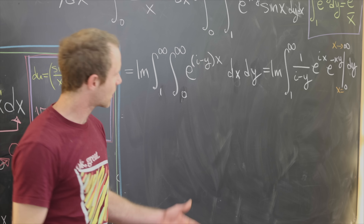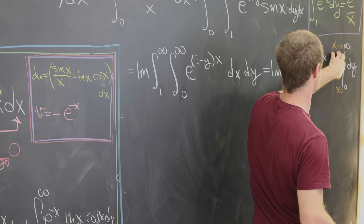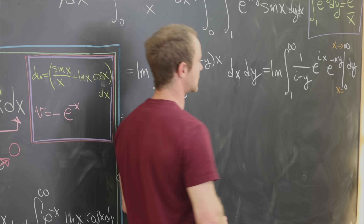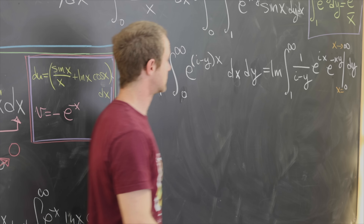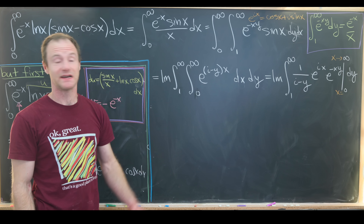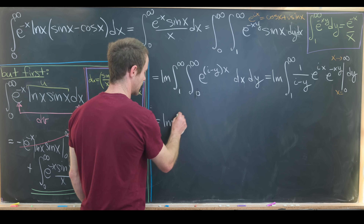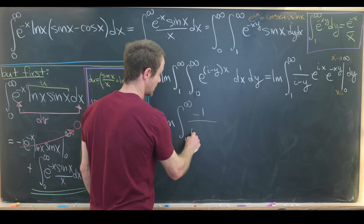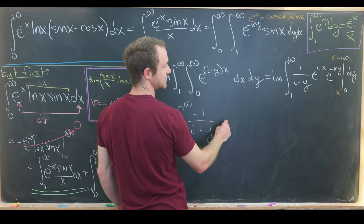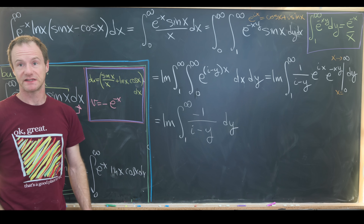Next, we switch the bounds of integration by Fubini's theorem, giving us dx dy instead of dy dx. Taking the interior integral over x is now straightforward, leaving us with the imaginary part of the integral from one to infinity of one over i minus y times e to the (i minus y)x evaluated from x equals zero to x approaches infinity. As x goes to infinity, the e to the minus xy term goes to zero, and setting x equals zero gives one — but since it's the lower bound, we get a minus one overall.